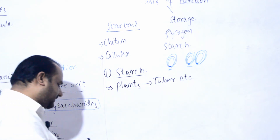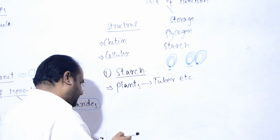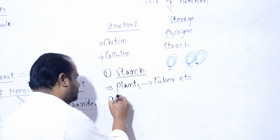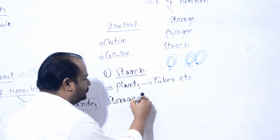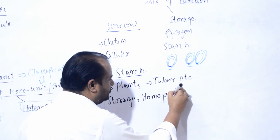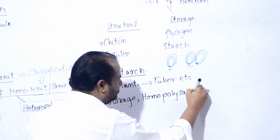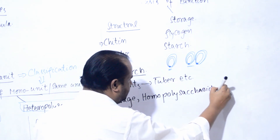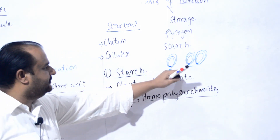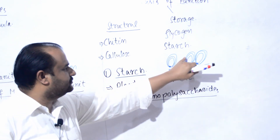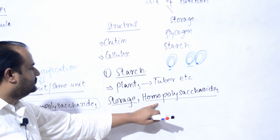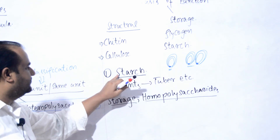Starch kya hain? These are storage polysaccharides. Dusri baat: homopolysaccharides hain - isliye ke tuber, potato, sugar beet wagaira on the basis of hilum starch ko store kar rahi hain. Aur homo isliye keh raha hoon ke glucose ke thousands of molecules aaapas mein milkar starch banate hain. Ab starch ko hum divide karte hain into two further classifications: amylose aur amylopectin.